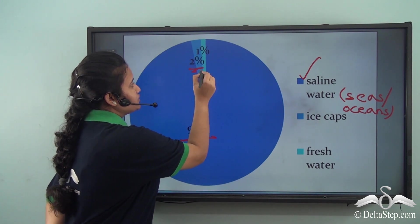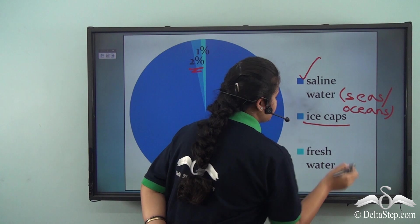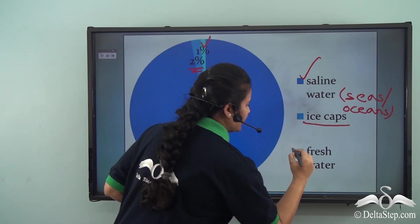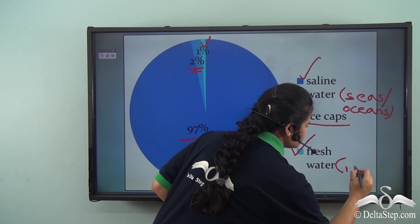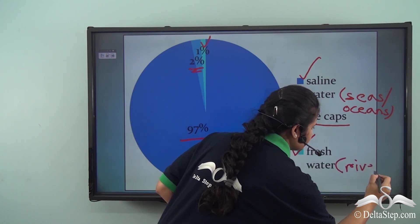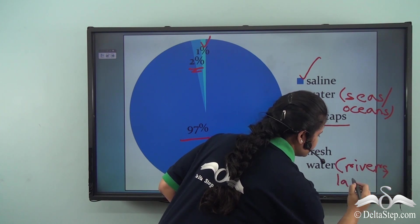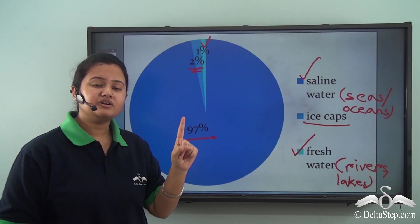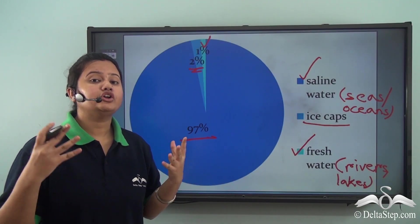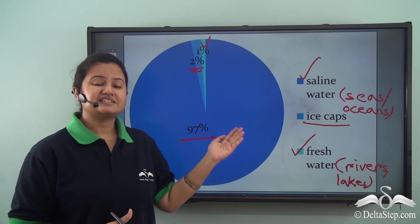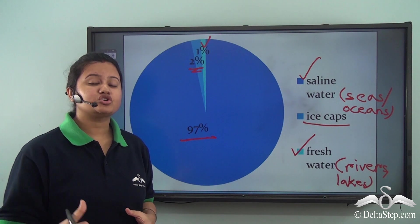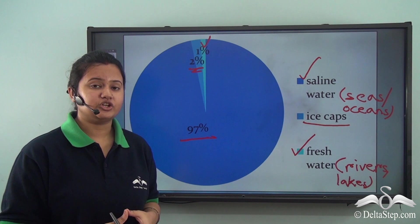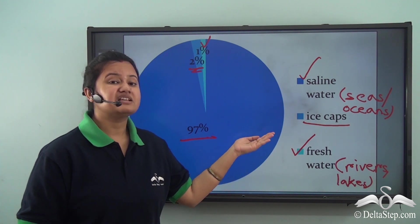2% of the remaining water is locked up in ice caps and glaciers, and just 1% is available as fresh water in rivers, lakes, and streams. So out of 100%, only 1% is available for human use. According to these statistics, there is a serious shortage of fresh water on earth, and we are worsening the situation by polluting this scarce resource.